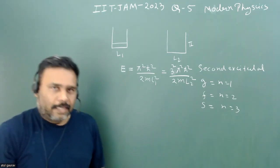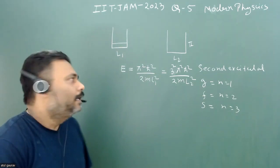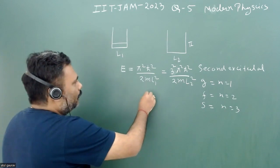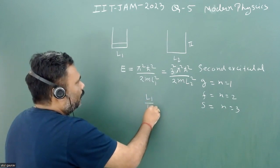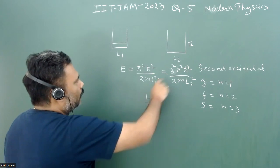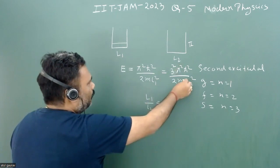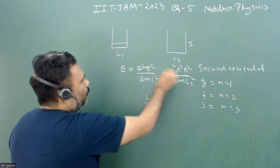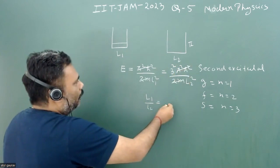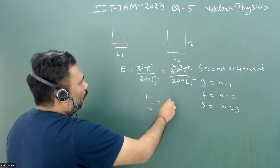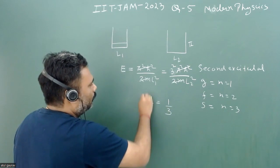What we have to do is calculate L1/L2. We can easily calculate L1/L2 by equating the energies and canceling out the common terms. What we get is L1/L2 = 1/3.